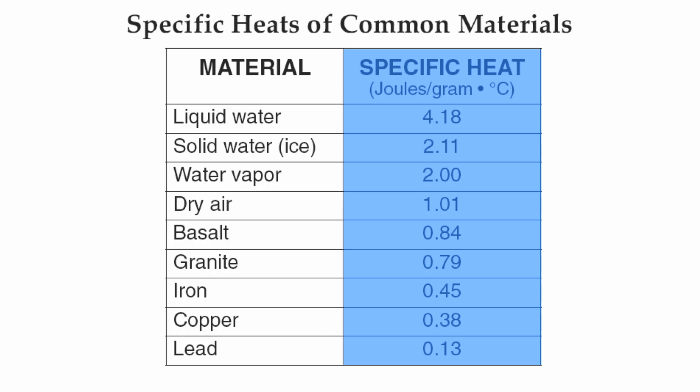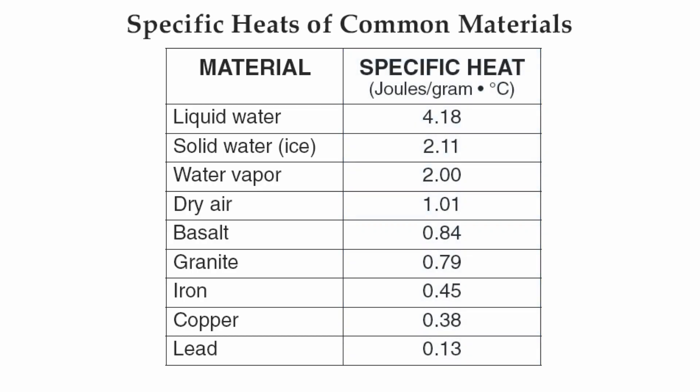Some things heat up quicker than others. Let's start with the very top substance, liquid water. Liquid water has the biggest number on there. The reason why water has the highest specific heat is, A, it reflects a lot of energy, and B, it's transparent, so it allows a lot of the sun's energy into it. So it takes a longer time to heat up. When you have substances that have a high specific heat, it means it heats up very slowly, and it also cools off very slowly as well.